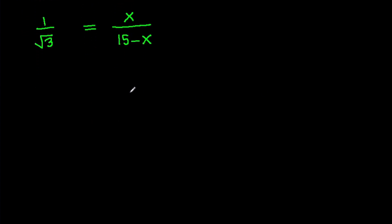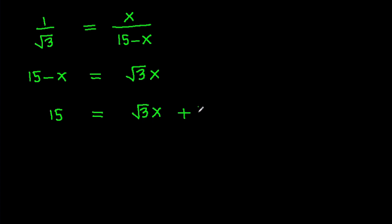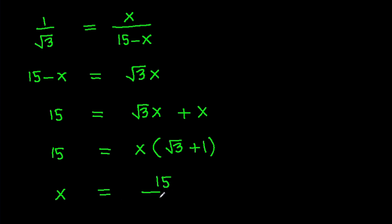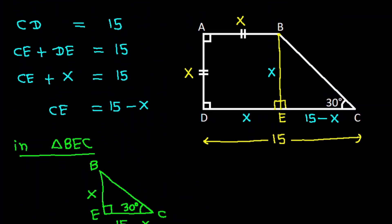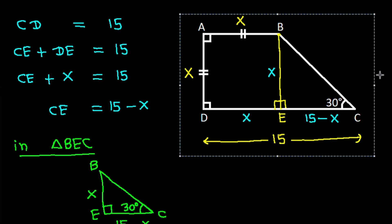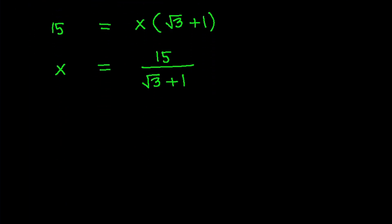Solving this, 15 minus X equals root 3 times X, so 15 equals root 3 times X plus X, giving 15 equals X times (root 3 plus 1). Therefore X equals 15 over (root 3 plus 1).